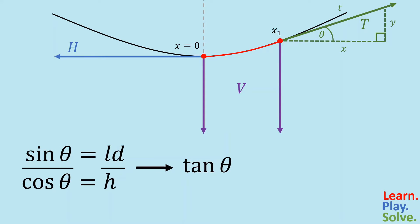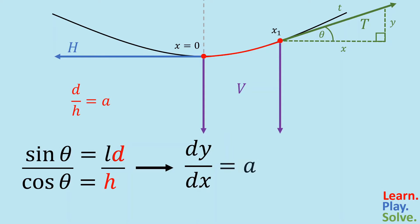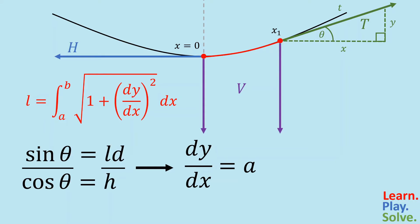For the right side, let's focus on d and h — these are just two constants that do not depend on the length of the section of the cable or the location of x1. So to simplify, we can substitute d over h with a new constant a. The length of this piece of cable is not a fixed value; it depends solely on where we place x. We can say it's a function of x and write it using the arc length formula from calculus, going from 0 to x as our limits of integration. This gives us a differential equation that describes the shape of the power line.